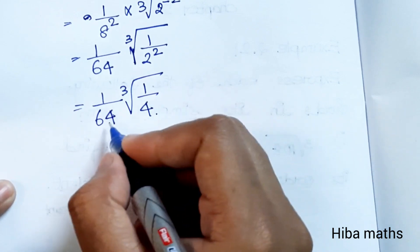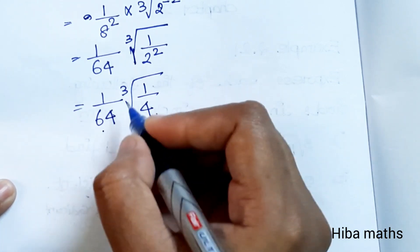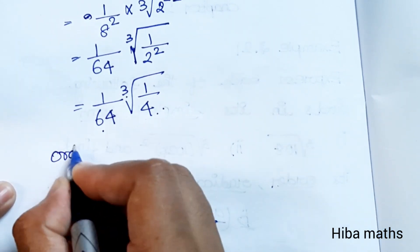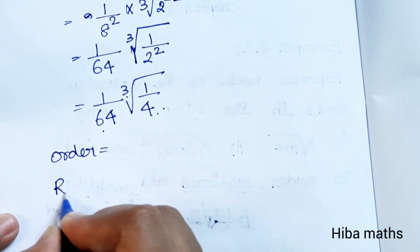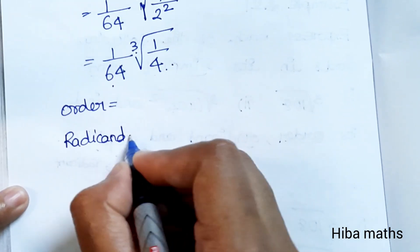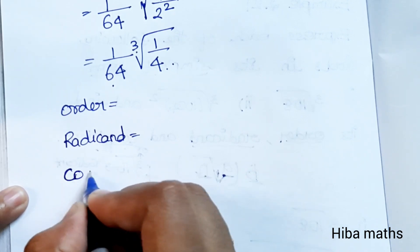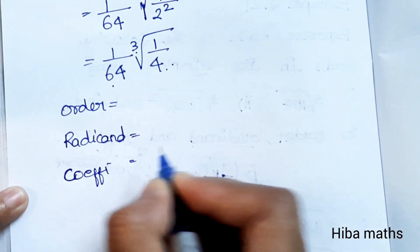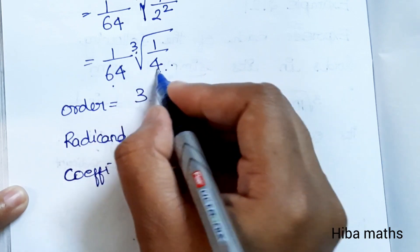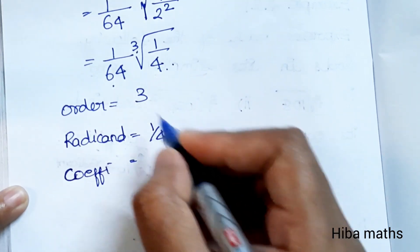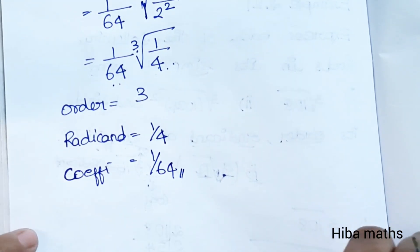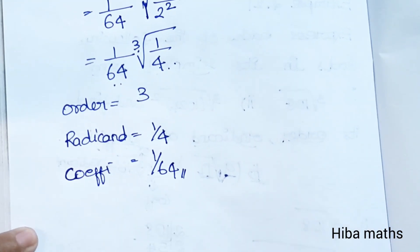Now identify the format: coefficient, order, radicant. Order is 3, radicant is 1 by 4, coefficient is 1 by 64. That's the answer. Thank you so much for watching.